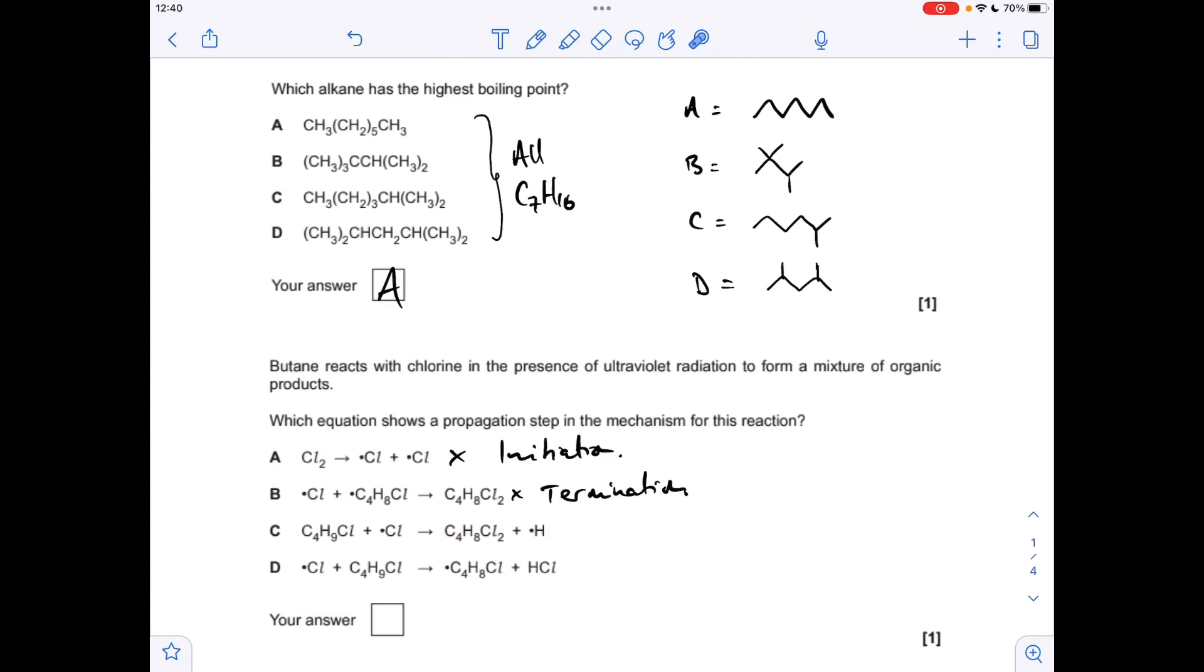But the one that fits this mechanism is D. So the thing I always tell my students to remember is in any sort of halogenation mechanism, the halogen radical, so chlorine in this case, will always strip out hydrogen from the molecule and give the hydrogen halide, so HCl in this case. So the answer is D.